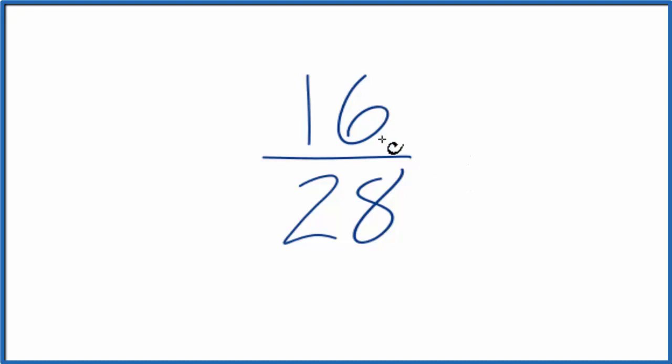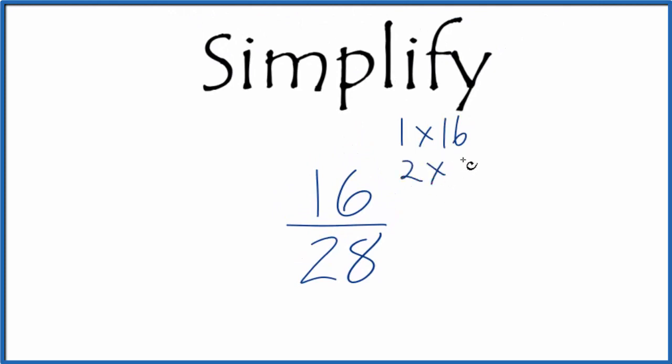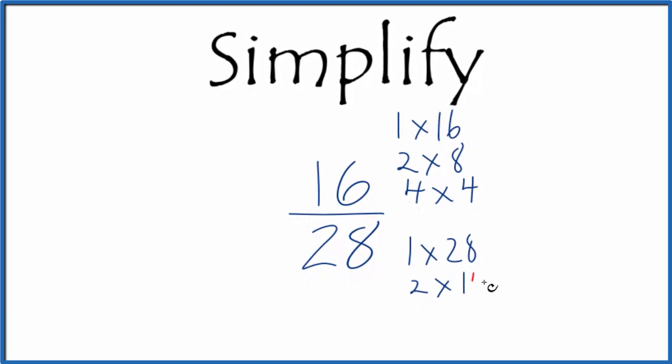Let's write the factors for 16: 1 times 16, 2 times 8, 4 times 4. These are the factors of 16. For 28 we'd have 1 times 28, 2 times 14, 4 times 7.